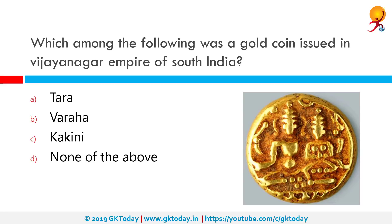Which among the following was a gold coin issued in the Vijayanagara Empire of South India? The correct answer is Varaha. Varaha was a gold coin, whereas Tara was a silver coin and Kakini was a copper coin.